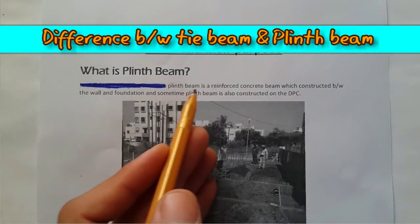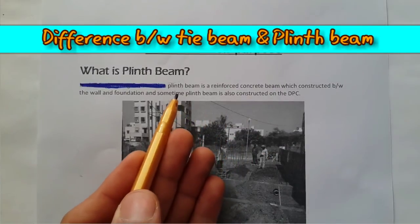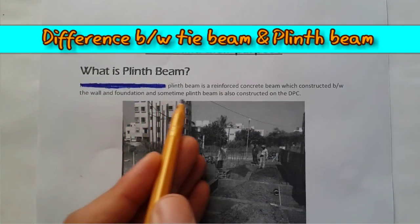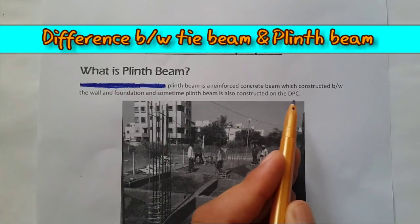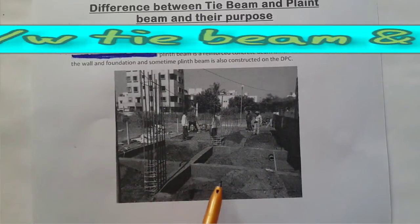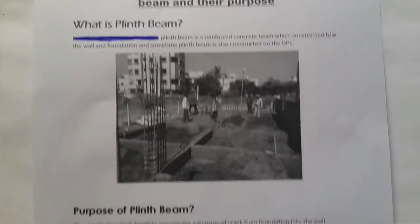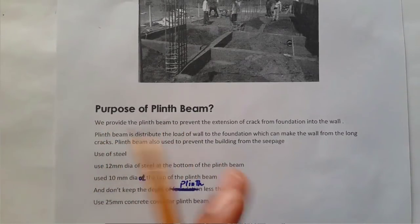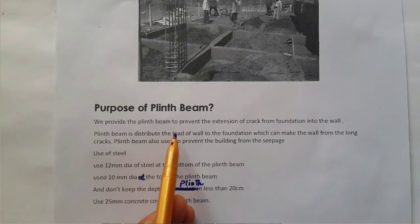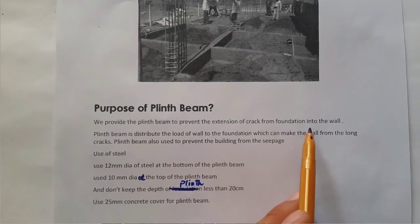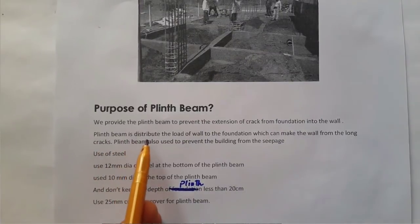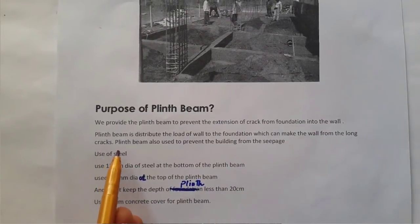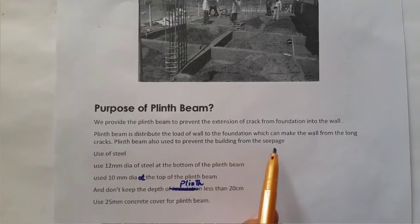First of all, I will define what is plinth beam. Plinth beam is a reinforced concrete beam which is constructed between the wall and foundation. Sometimes plinth beam is also constructed on the DPC — damp proof course. The purposes of plinth beam are: to prevent the extension of cracks from the foundation into the wall, to distribute the load of the wall to the foundation, and to prevent the building from seepage.